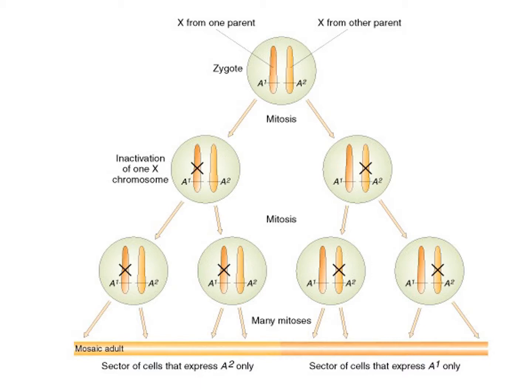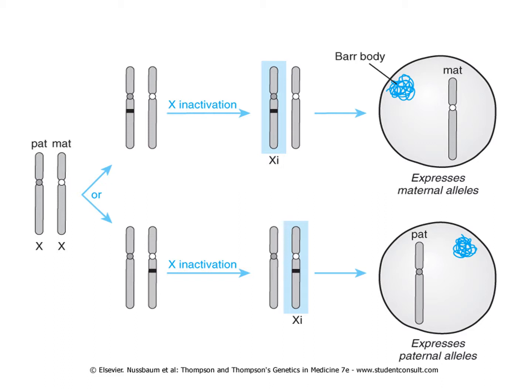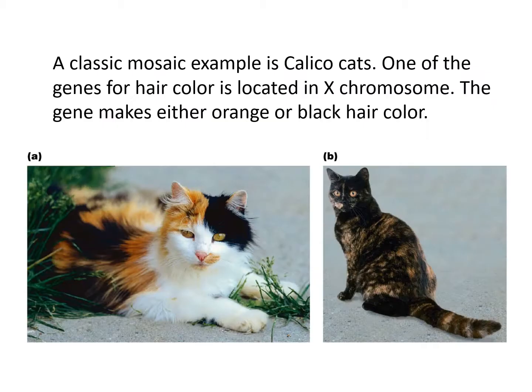In this diagram: a zygote has one X from each parent. When the embryo reaches about 200 cells, in certain cells one X gets inactivated and in other cells the other X gets inactivated. When cells divide, all descendant cells contain the same inactive X. XI stands for inactive and XA for active. X inactivation is an epigenetic process — the chromatin of the inactive X becomes condensed and turns into a Barr body.